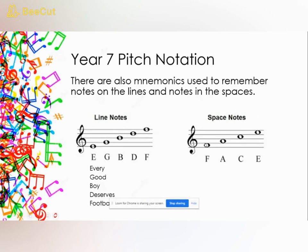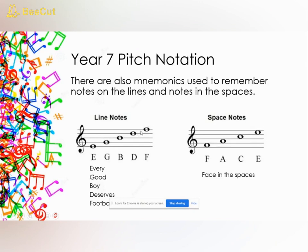The notes in the spaces spell the word FACE — F, A, C, E — and 'face in the spaces' helps us remember that. You'll also notice that the space between E and G is F, the space between G and B is A, the space between B and D is C, and the space between D and F is E, because it follows alphabetical order.